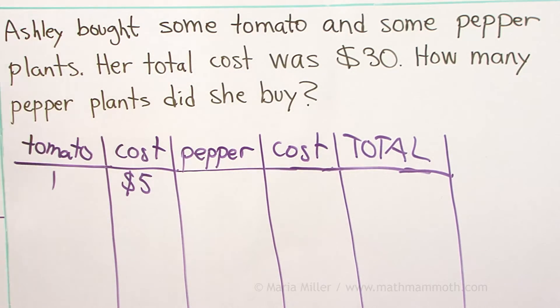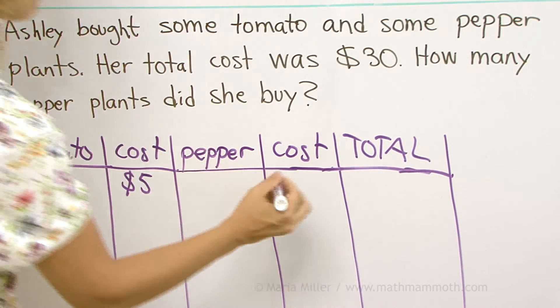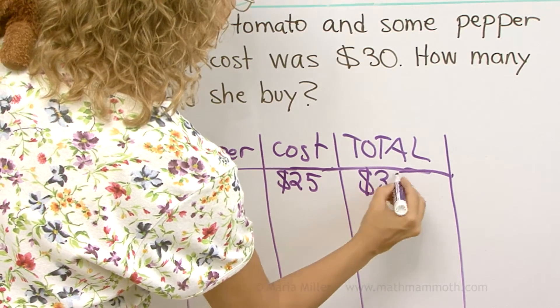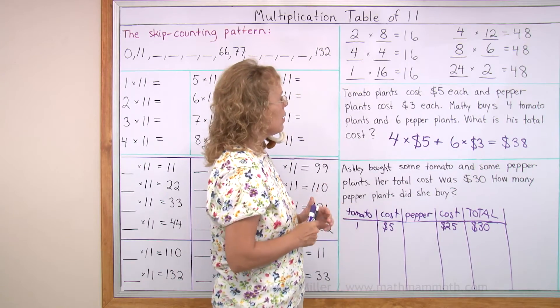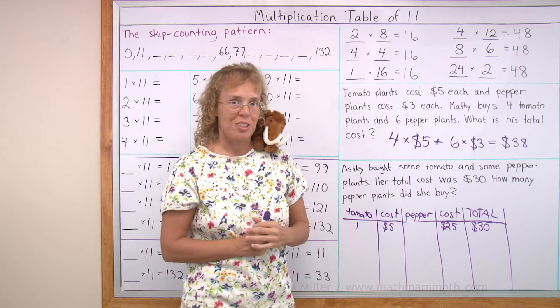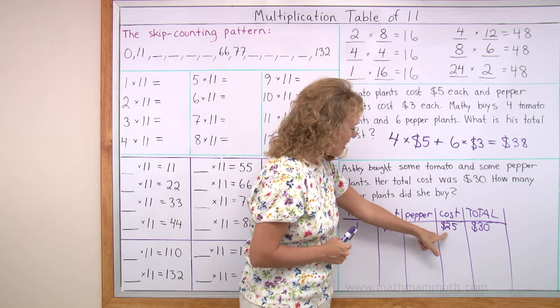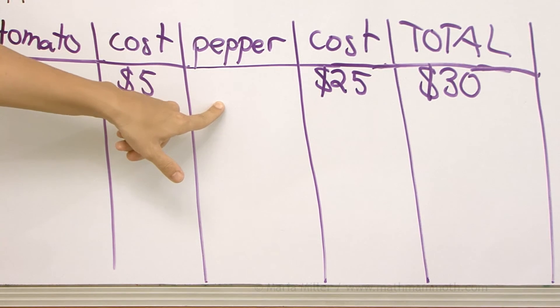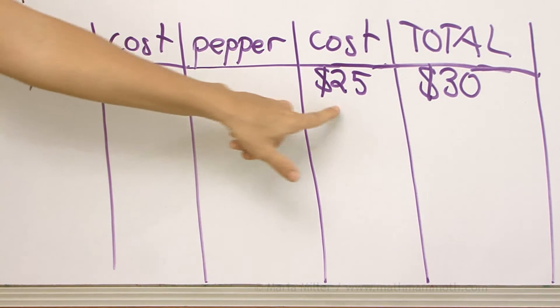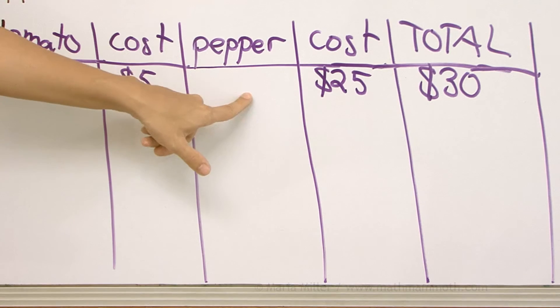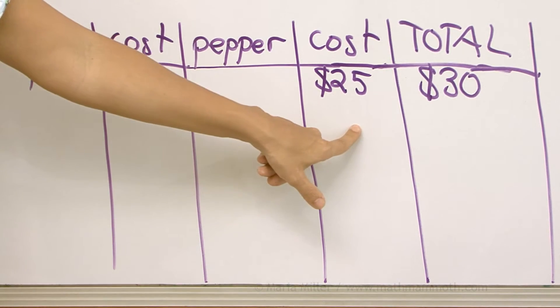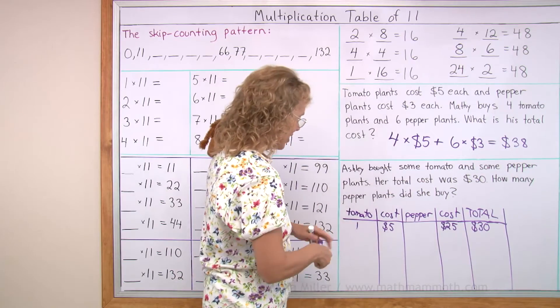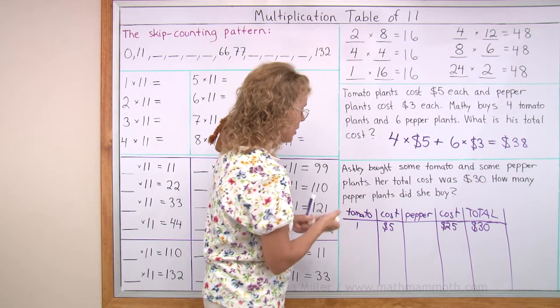If I guess that she buys one tomato plant, that's one tomato plant, then the cost of that is $5, and the total has to be 30. So the pepper plants would need to cost 25. The pepper plants were $3 each, so how many pepper plants would she have bought so that the total for the pepper plants would be 25? So many times 3 dollars will never make 25 because 25 is not in the table of 3. So this will not work.